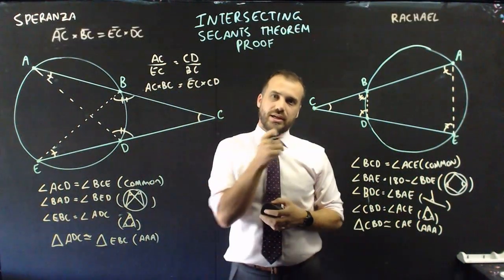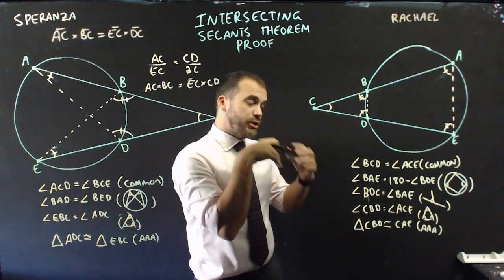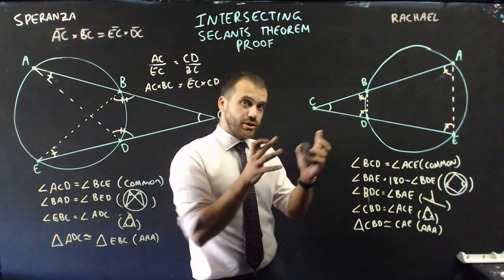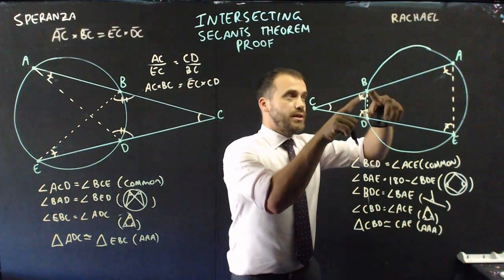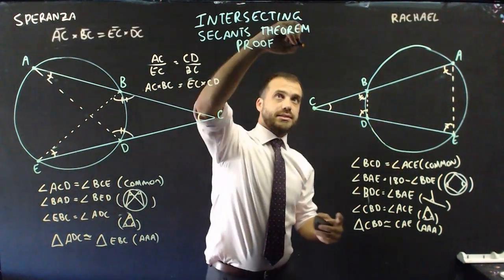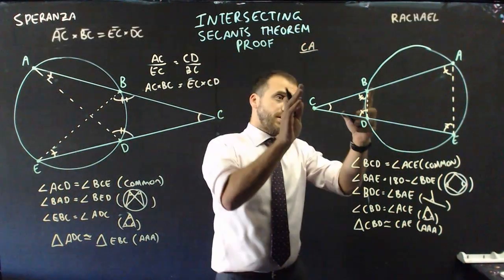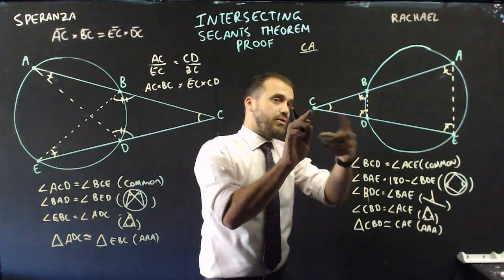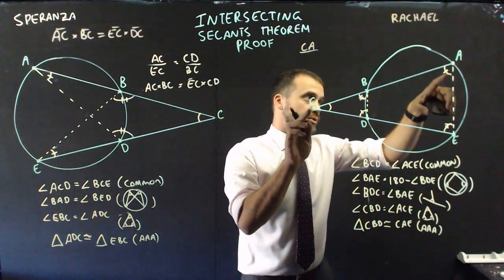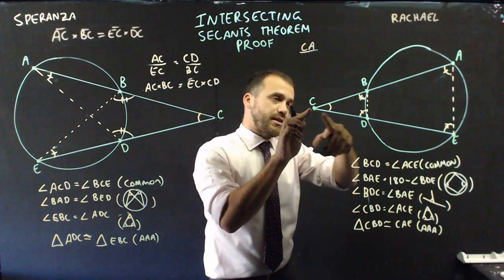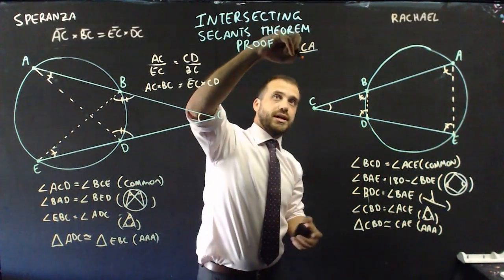Now, Rachel can do the same thing, but she also needs to be really careful about what side she's making her ratios. Now, this one here, CA, matches up with CD, right? We go from this length to the one-dash angle, this length to the one-dash angle, CA to CD.